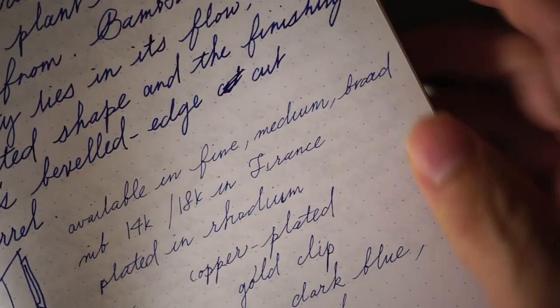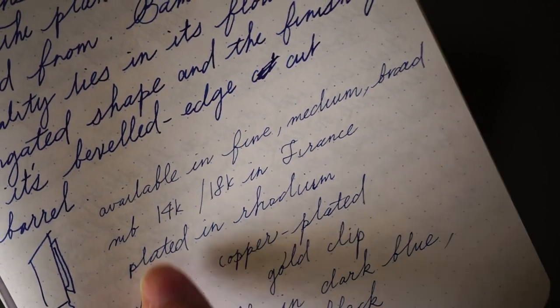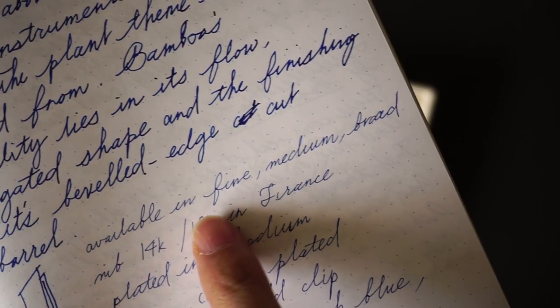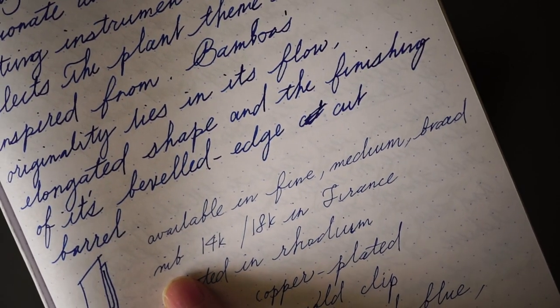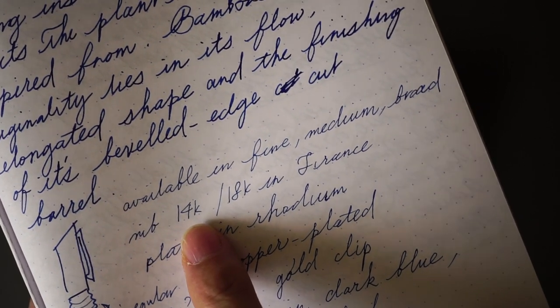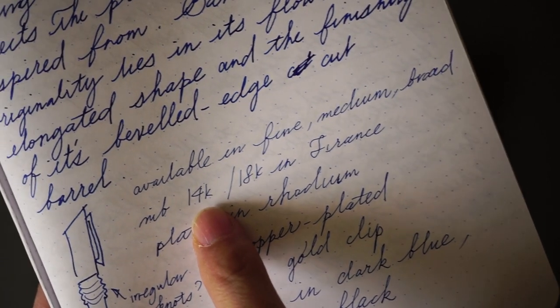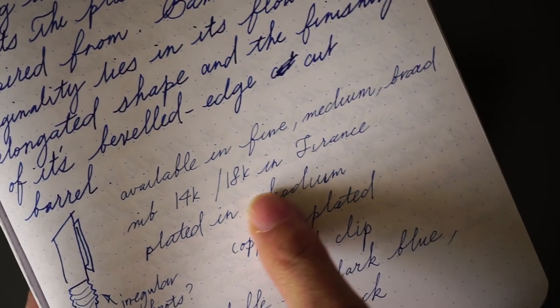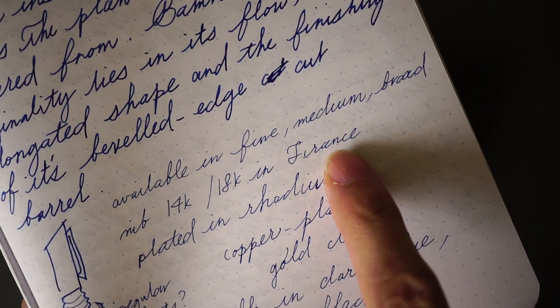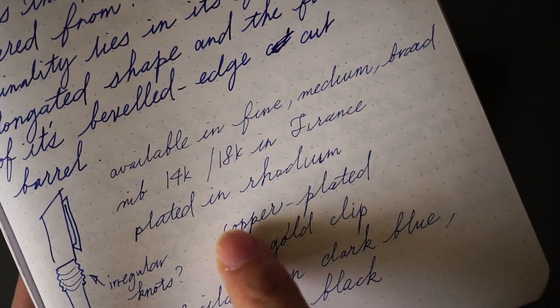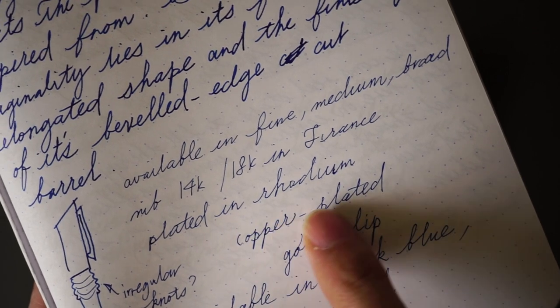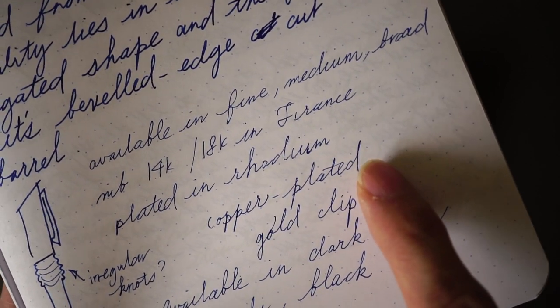The pen was available in fine, medium, and broad. And interestingly, the nib was available in 14-karat gold in other parts of the world. However, it was available only in France as an 18k nib. You'll see later on that the nib is actually plated in rhodium, kind of a silvery colour.